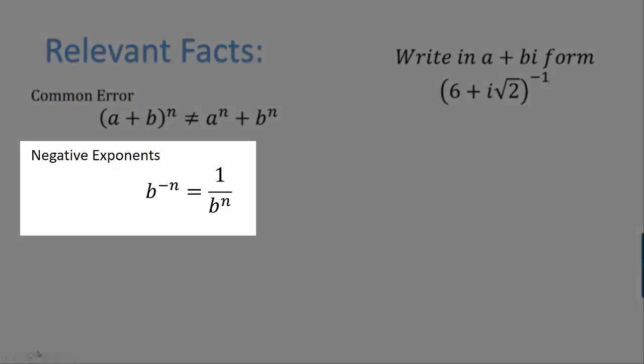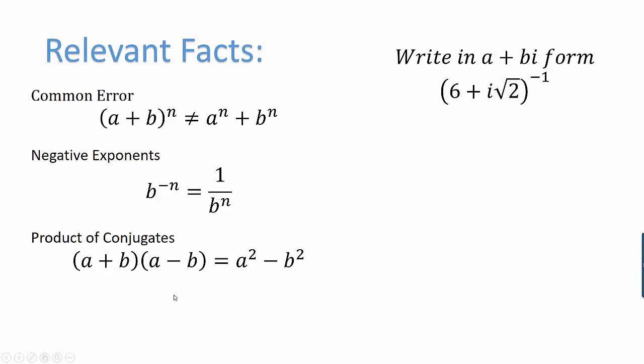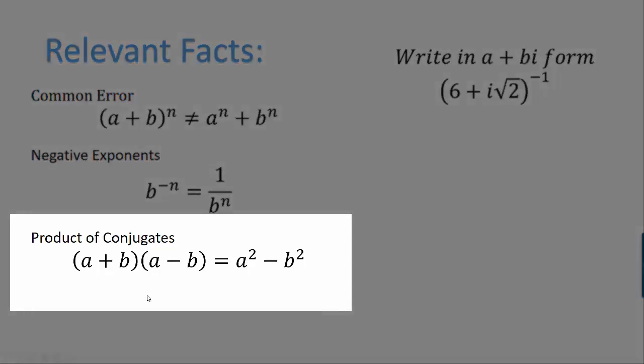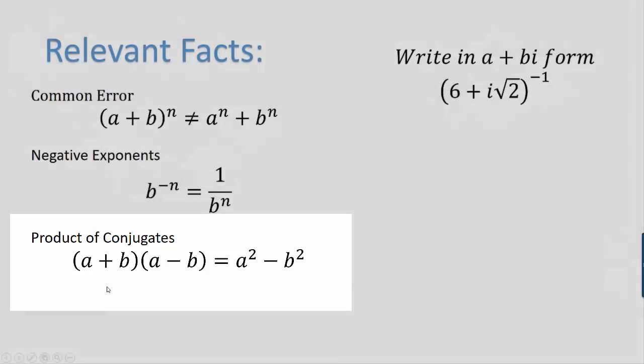Another thing we need to keep in mind is that when we raise a number to a negative exponent, that's the same as taking 1 over that number to the positive version of the exponent. We're also going to use a trick in this procedure where we have to remember what happens when we multiply a plus b times a minus b. We always get a squared minus b squared. In other words, the middle terms cancel out. This is called a product of conjugates. Conjugates are binomials that have the same two terms but with a different sign in the middle.